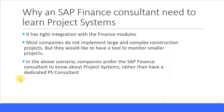An SAP Finance consultant needs to learn Project Systems because it is tightly integrated with the SAP FI and CO modules. WBS is one of the important cost objects in the CO module. In financial accounting, costs from a large project are put into the Project Systems module — your WBS and your project — and then finally settled into a fixed asset, because when you construct a building it is an asset under construction and must eventually become a fixed asset, creating tight integration with the SAP FI module.